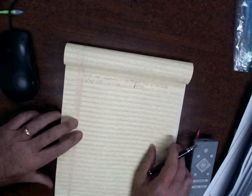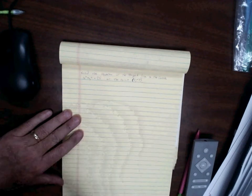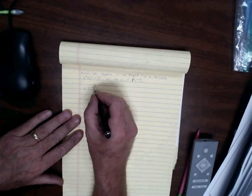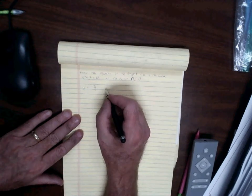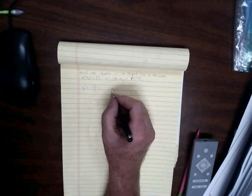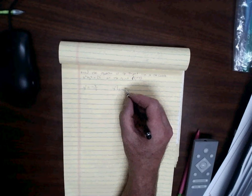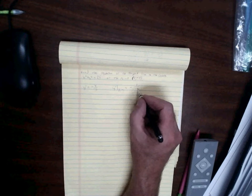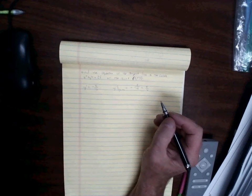Finally, the last example: finding the equation of the tangent line to the curve x squared plus y squared equals 25 at the point (3, negative 4). We already found y prime equals negative x over y. That's the slope of the tangent line. Plugging in the point (3, negative 4): y prime equals negative 3 over negative 4, which equals 3/4.